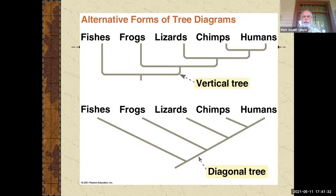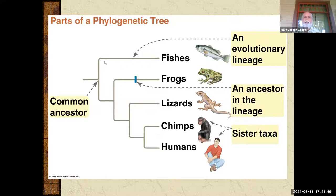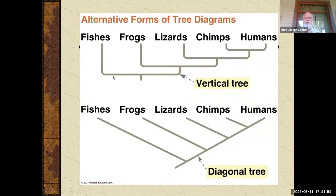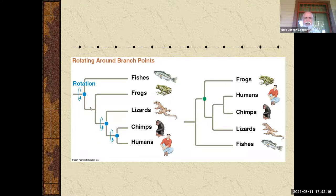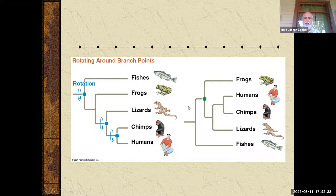Trees can look different — vertical, diagonal — depending on who draws them, but they all say the same thing. Some try to convey more information than others. This is a cladogram, one of the more common ones today, and a little easier to draw. Some of these will give you an idea of how long species have been around, though they're getting away from that. Also realize trees can rotate — so all these representations say the same thing, with rotating points and branches. Frogs, humans, chimps, and lizards all have a common ancestor; it's just shown differently depending on which taxa are included.